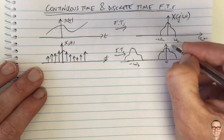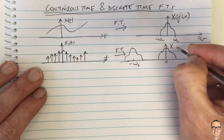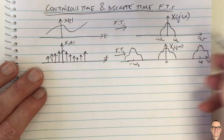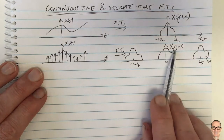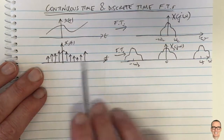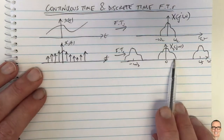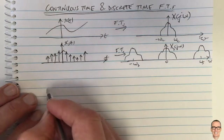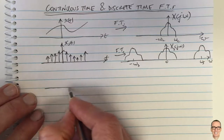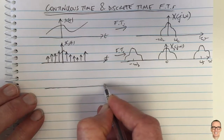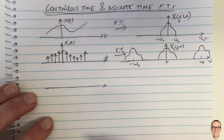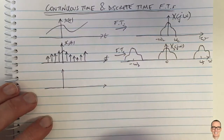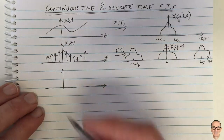Therefore, we call this X_s(jω) — that's the continuous time Fourier transform of the sampled signal. Now, we also have the concept of discrete time signals, and then we have Fourier transforms of those discrete time signals.